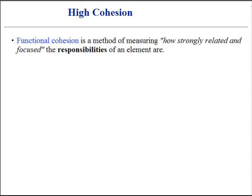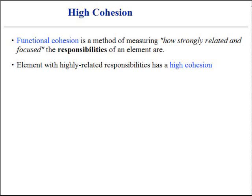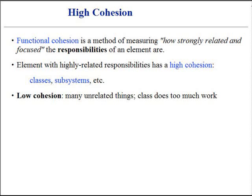Functional cohesion is a method of measuring how strongly related and focused the responsibilities of an element are. An element with highly related responsibilities, which does not do a tremendous load of work, has high cohesion. These elements include classes, subsystems, and so forth. The class with low cohesion is overwhelmed by many unrelated things or does too much work. Having such classes is undesirable.